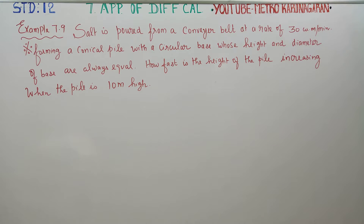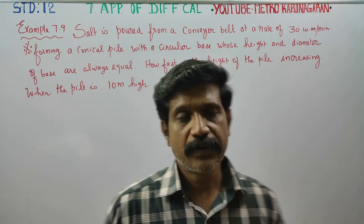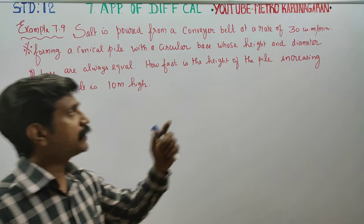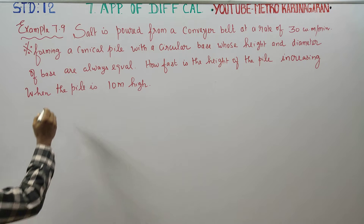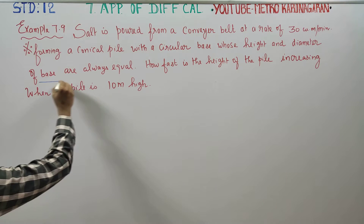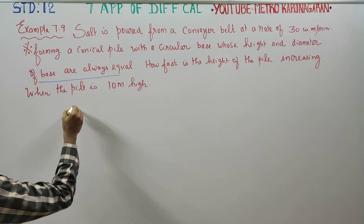Salt is poured from a conveyor belt at a rate of 30 cubic meters per minute, forming a conical pile with a circular base, and the height and diameter of the base are always equal.